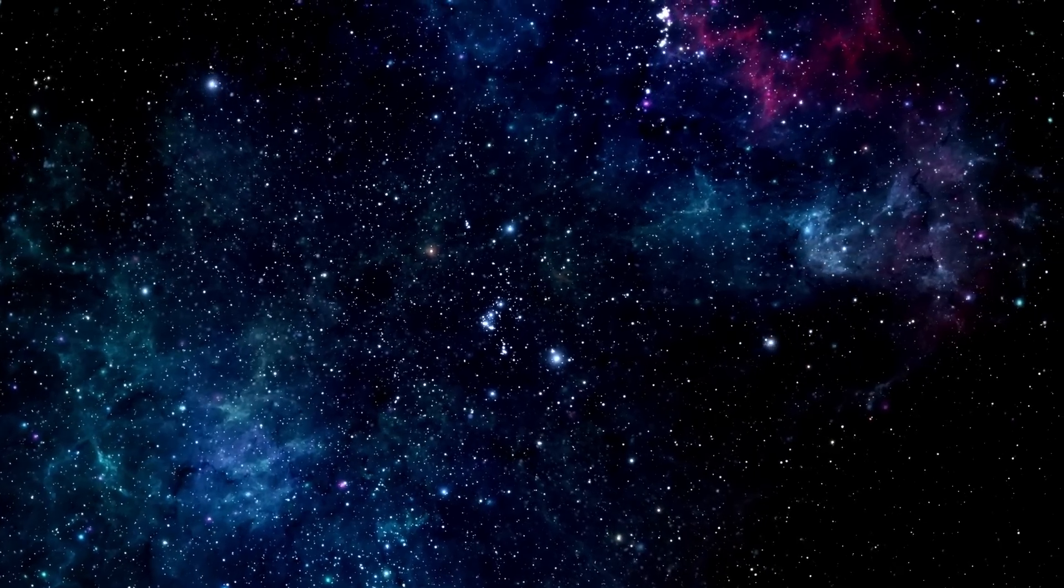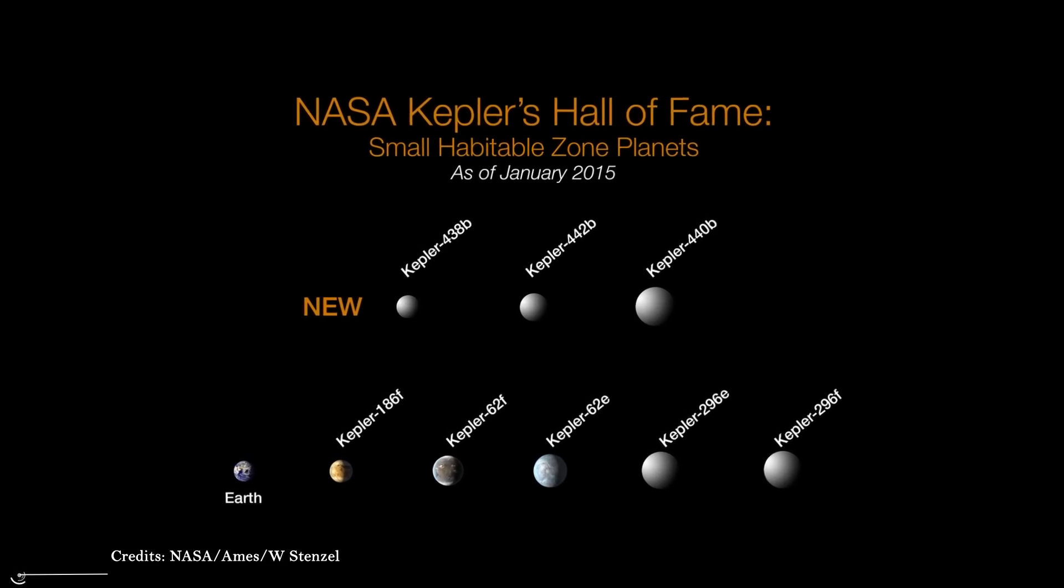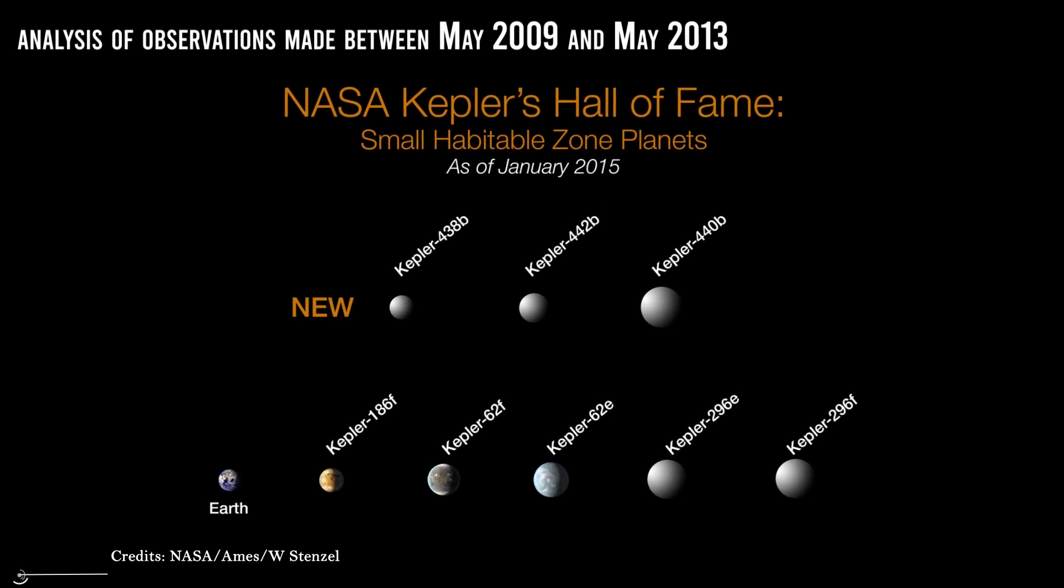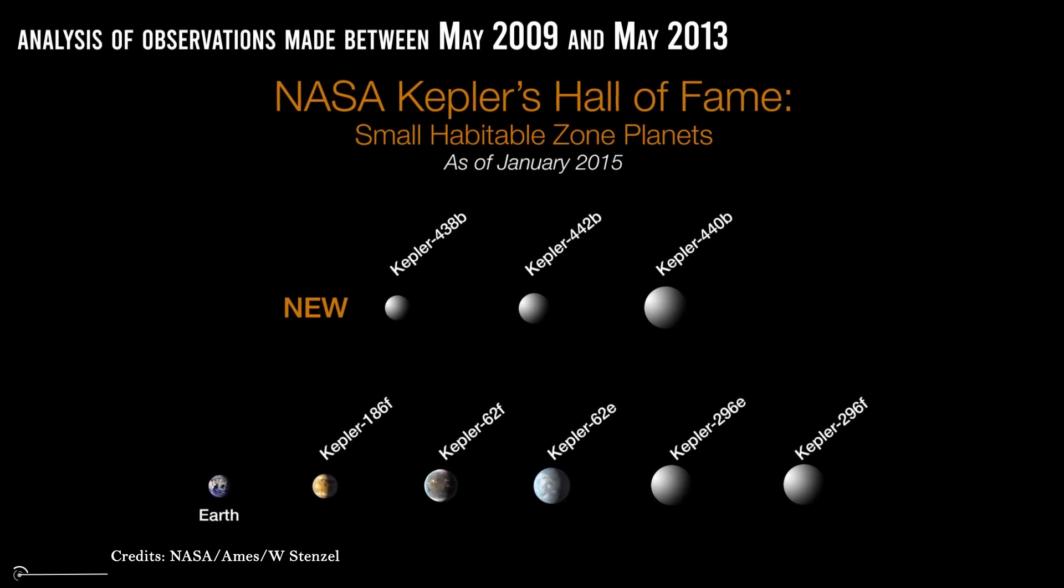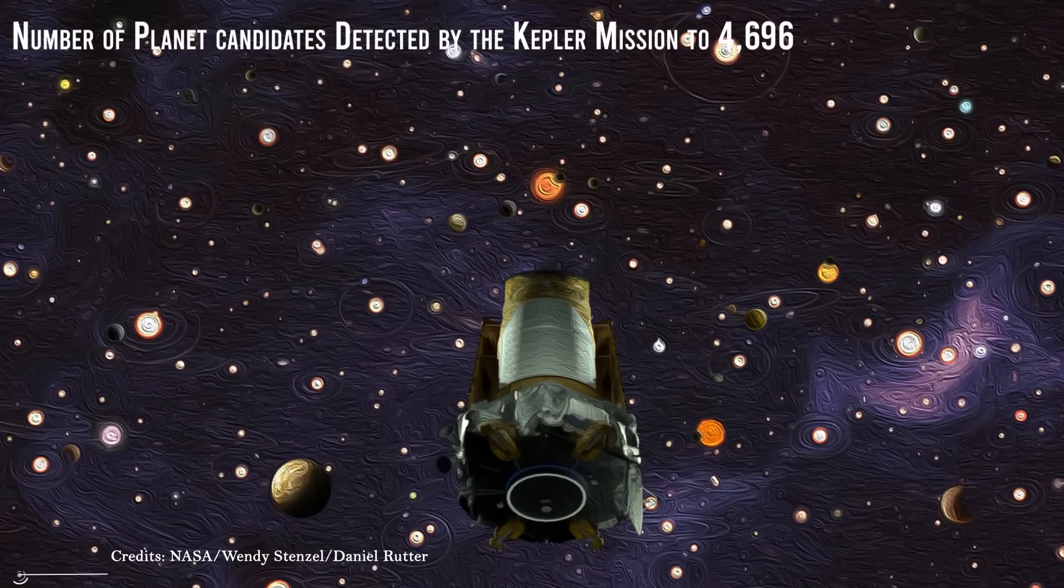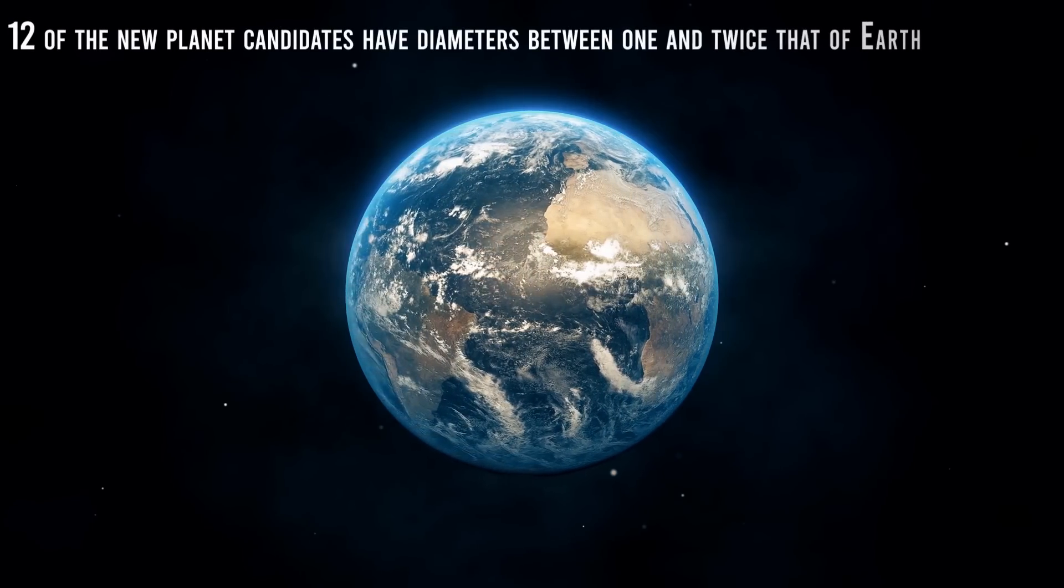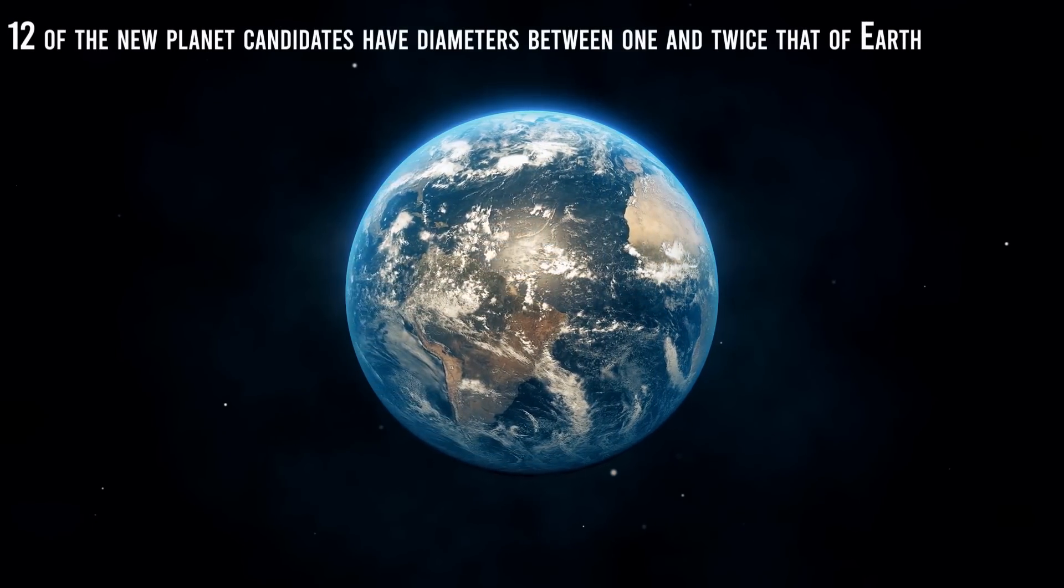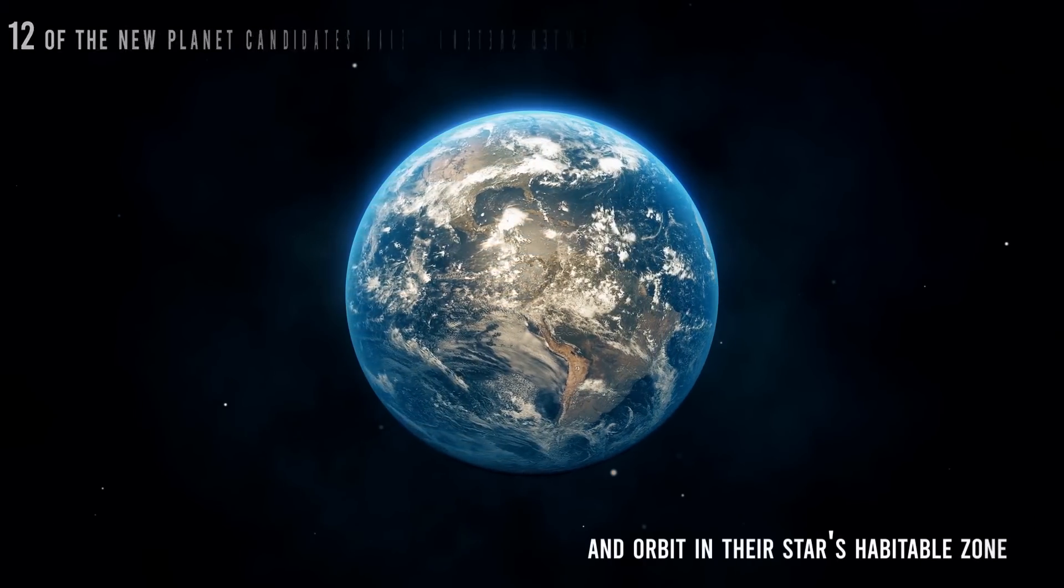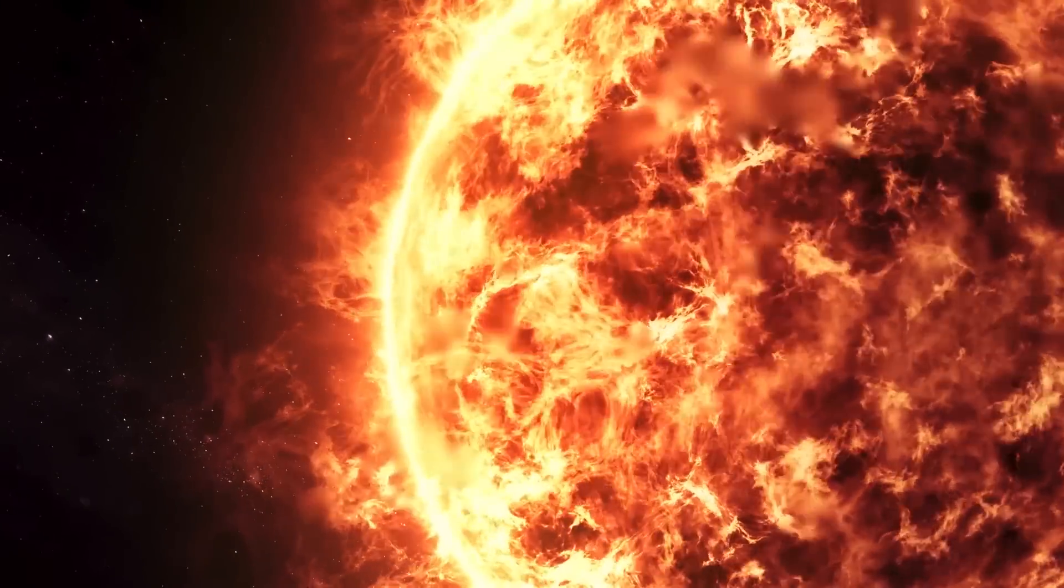In addition to confirming Kepler-452b, the Kepler team has increased the number of new exoplanet candidates from their analysis of observations made between May 2009 and May 2013, bringing the number of planet candidates detected by the Kepler mission to 4,696. The other candidates require observations and follow-up analysis to verify that they are real planets. Twelve of the new planet candidates have diameters between one and twice that of Earth, and orbit in their star's habitable zone. Of these, nine orbit stars are similar to our Sun in size and temperature.